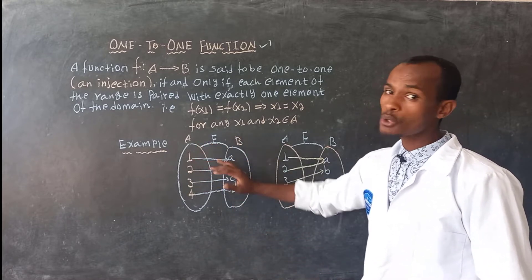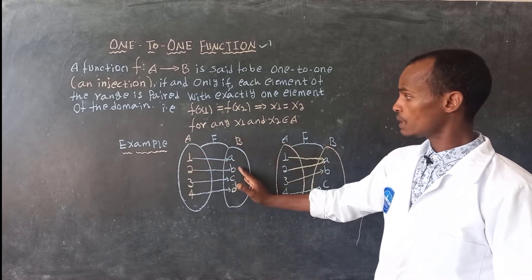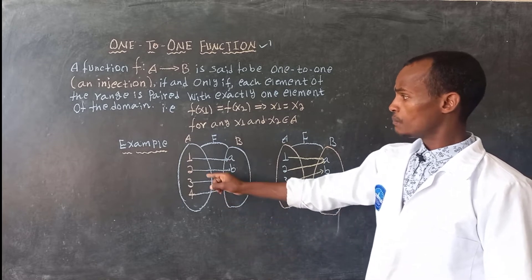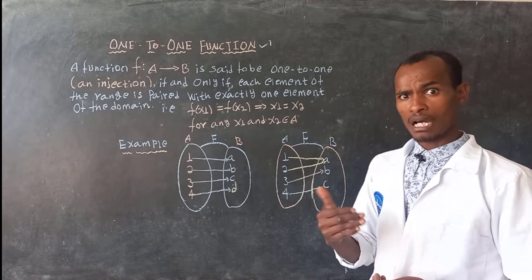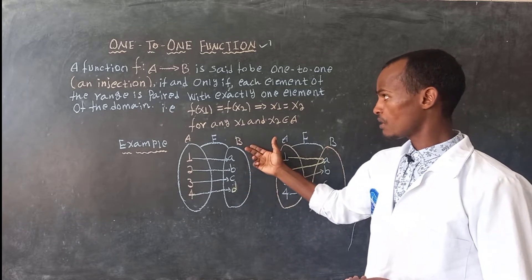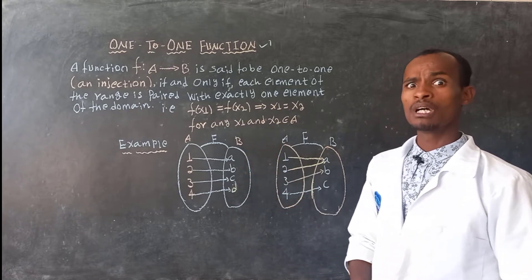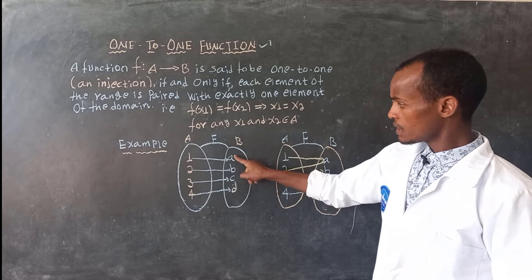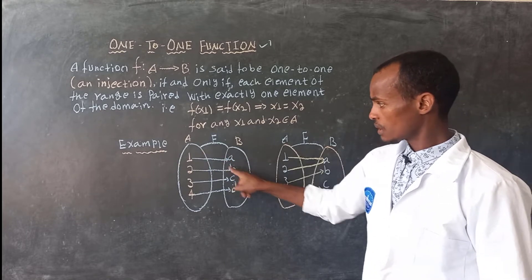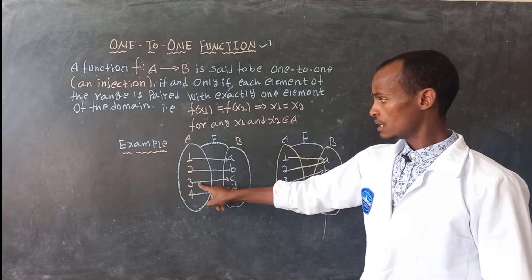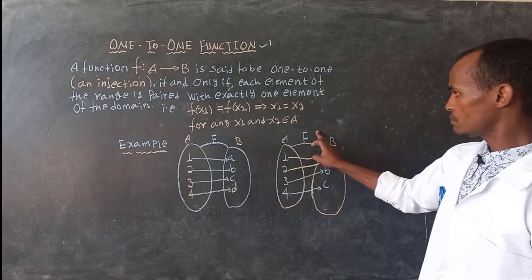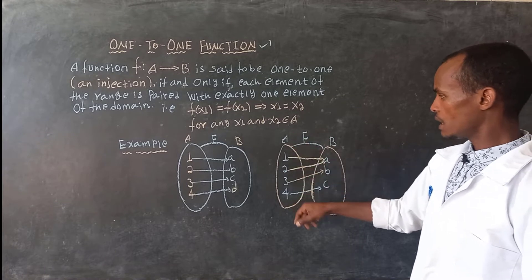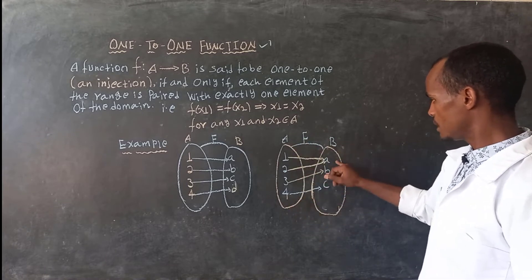You can see a particular element, and in an element, you can see a condition — there is a function, which can be called a function. You can see a function with A, and B, and C and D.